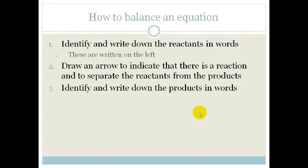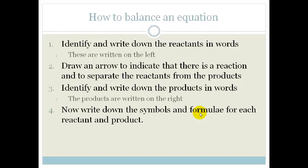Step 3: We identify and write down the products in words, and these are written on the right-hand side of the arrow. And now you write down the symbols and formula for each reactant and product and then you balance the equation. Now all this might seem a little bit complicated, but we've got a lovely little video which shows you how to do it step by step.